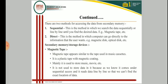There are two methods for accessing data from secondary memory. One is the sequential method, where data can only be accessed step by step, line by line. You have to go through line by line until the desired data is identified — the example is magnetic tape. The direct method includes memory where we can directly go to the information we want, such as a magnetic disk or optical disk.